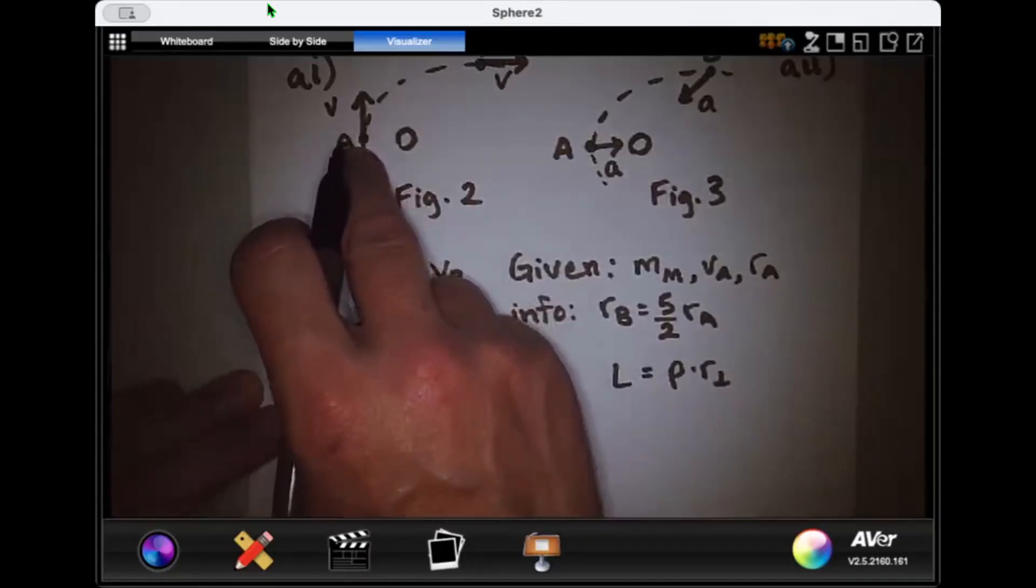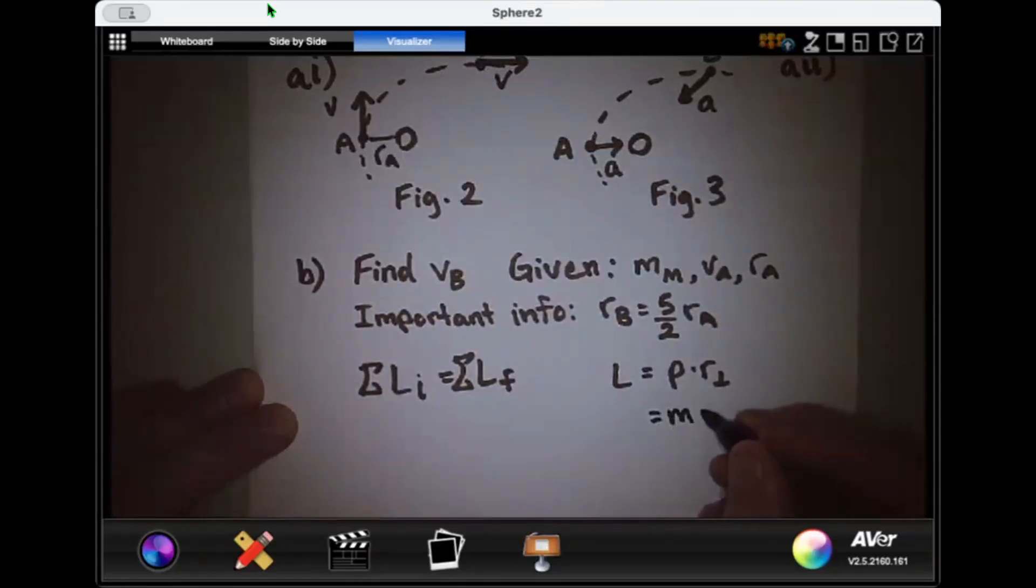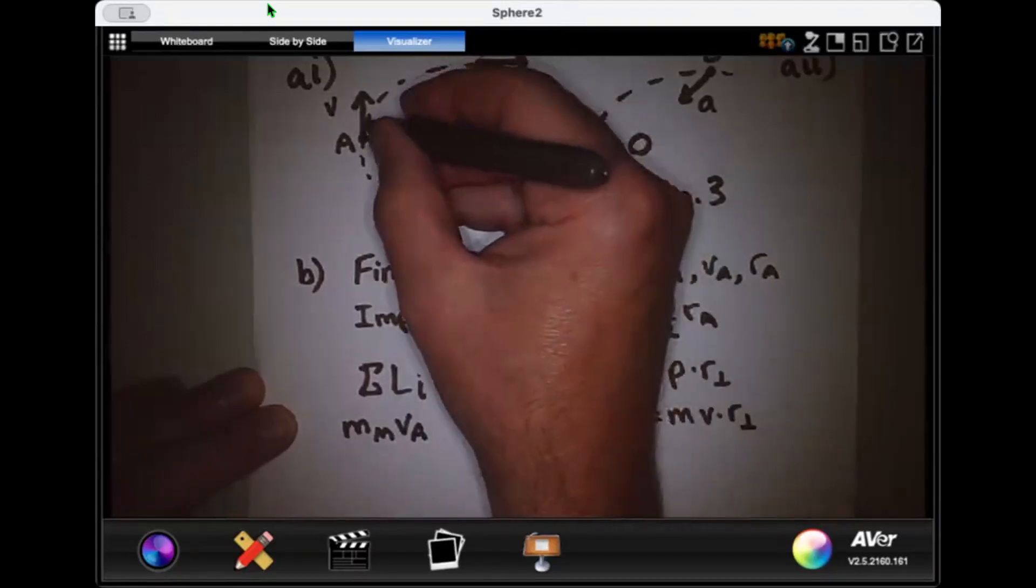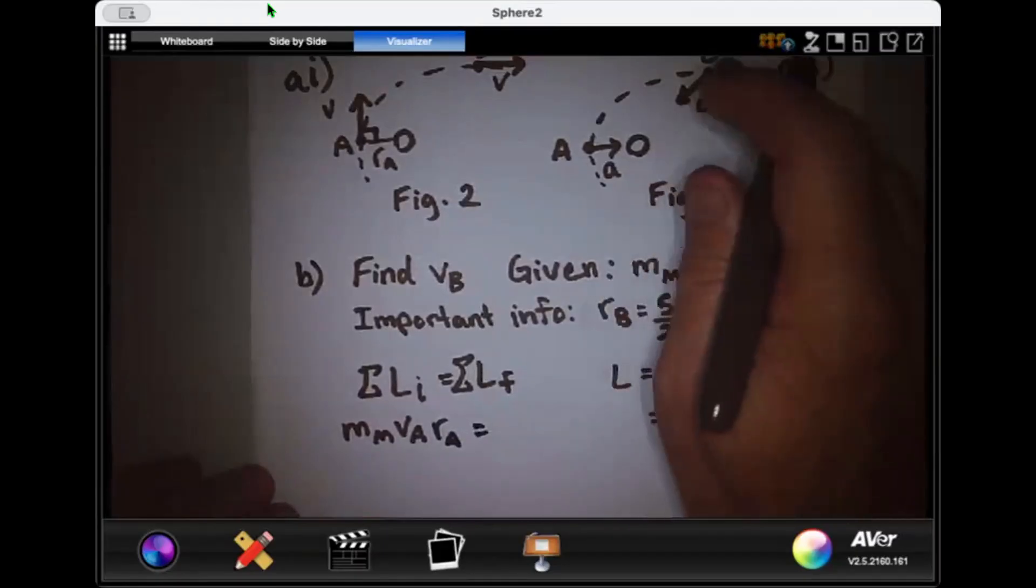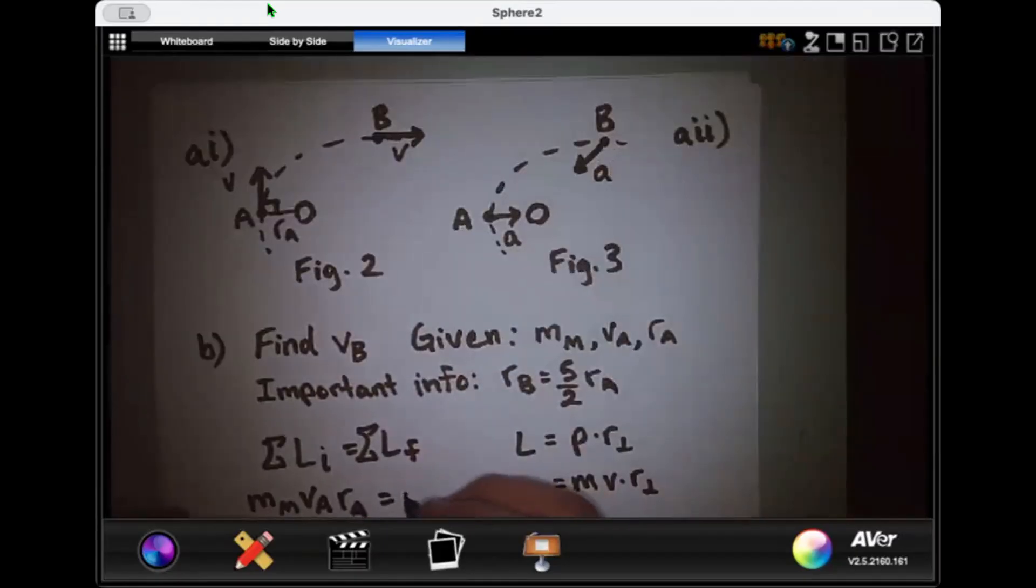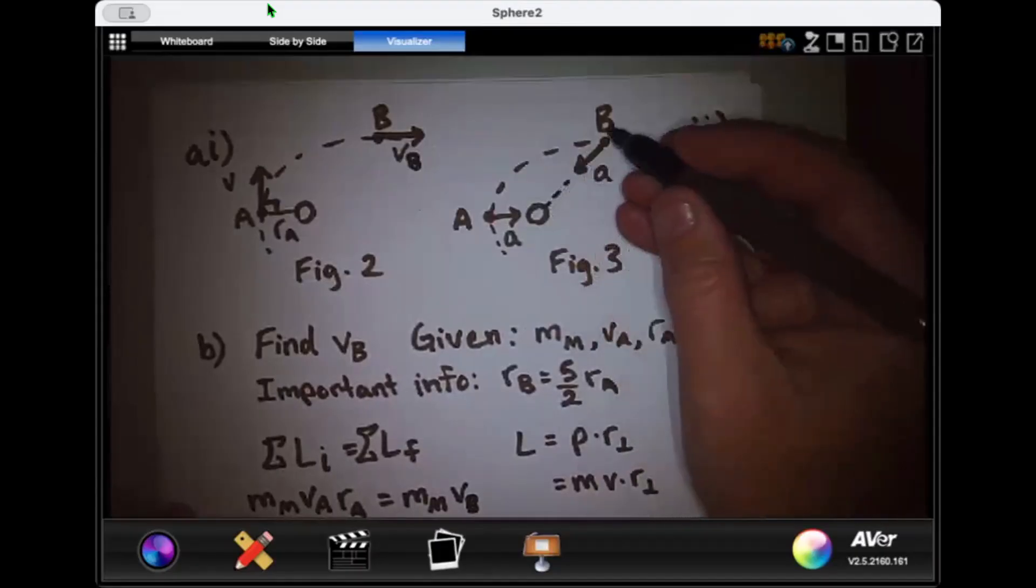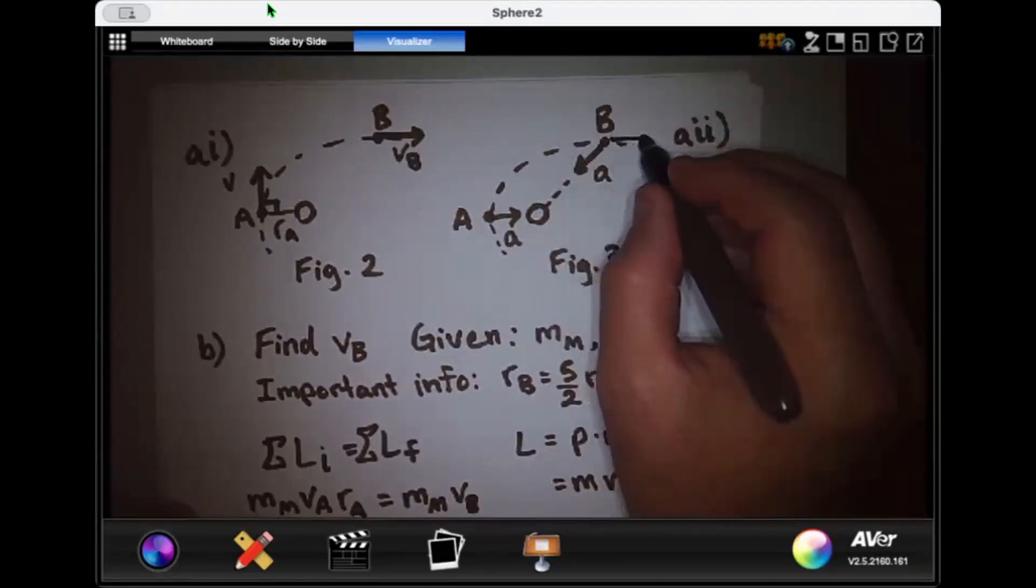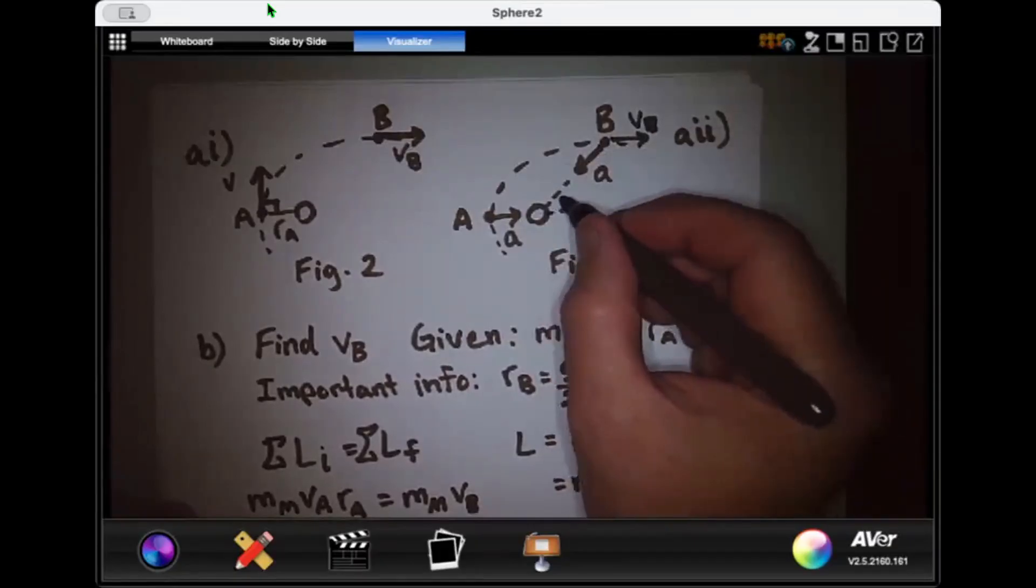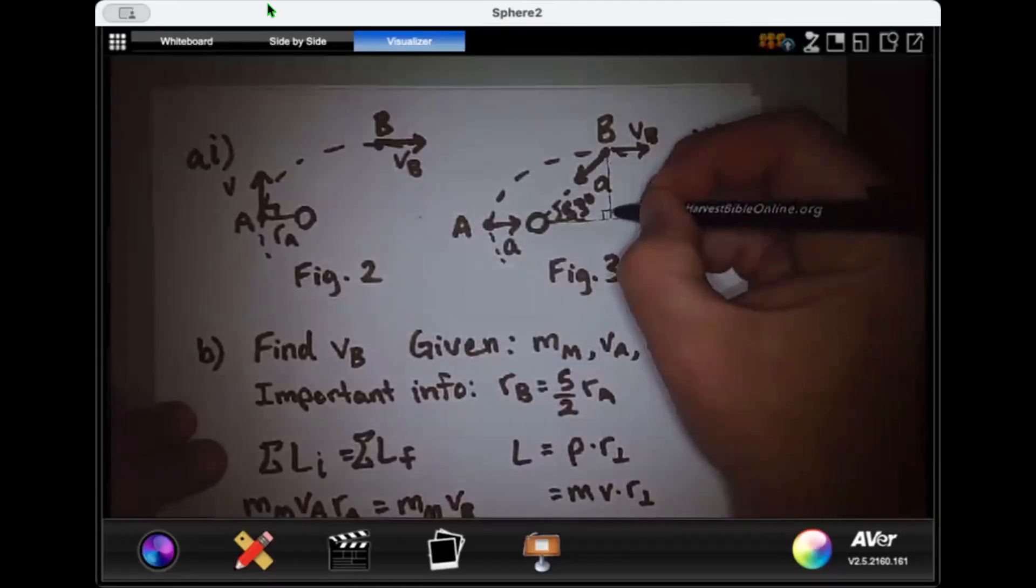All right. So let's get into it. So initially, our moon is right at this location A, and it's a distance RA from the planet that's right here. So using this equation, remember that P is equal to MV times that perpendicular radius. So I can put in mass of the moon times my velocity A times my perpendicular radius. But you'll notice the radius is perpendicular to the velocity. So let's just put in RA. And that's good.